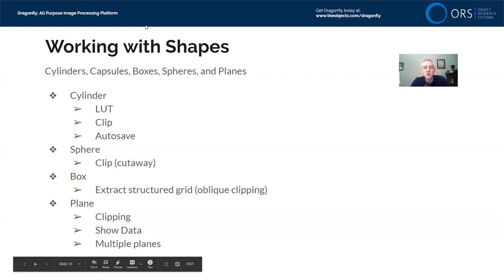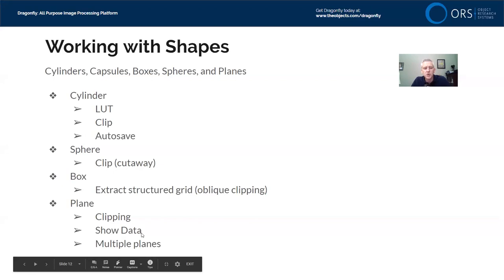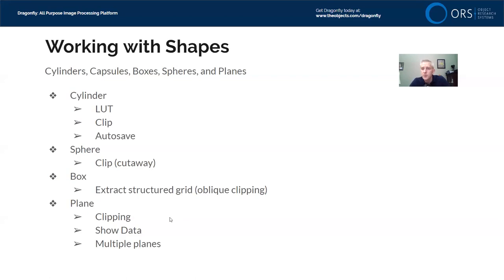The agenda for today, working with shapes: we're going to talk about shapes, which include cylinders, capsules, boxes, spheres, and planes. We will look at cylinders — using cylinders to change the coloring or lookup table of part of an image channel inside the cylinder. We'll also look at clipping, which is the dominant topic for today. We'll look at spheres for cutaway effects, boxes for clipping and extract structured grid for oblique clipping, and planes for clipping and showing data, including multiple planes.